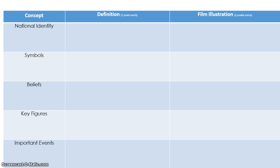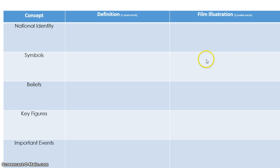Here are the second set of five concepts that you will have to define and then provide a visual cue that illustrates their meaning. National identity is an important concept found in both the first related issue and the fourth related issue, and it needs to be defined. Once you have defined it and all of the other concepts, you will begin to watch the film and provide visual cues with explanations that illustrate the meaning of the terms.